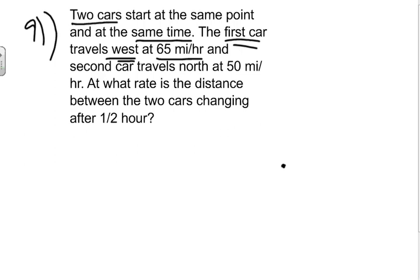So we draw this out. We have one point, and we have one car traveling west this way. I'll just draw a little car traveling west, and we'll call this car A. Since it's traveling west, we know that dA/dt is going to equal 65 miles per hour.